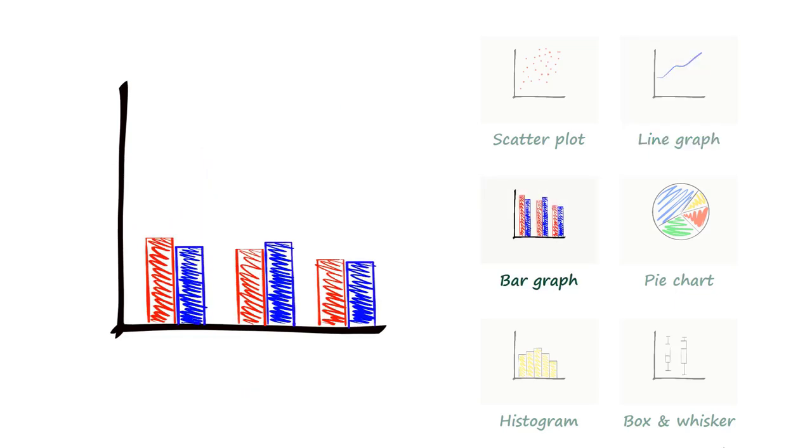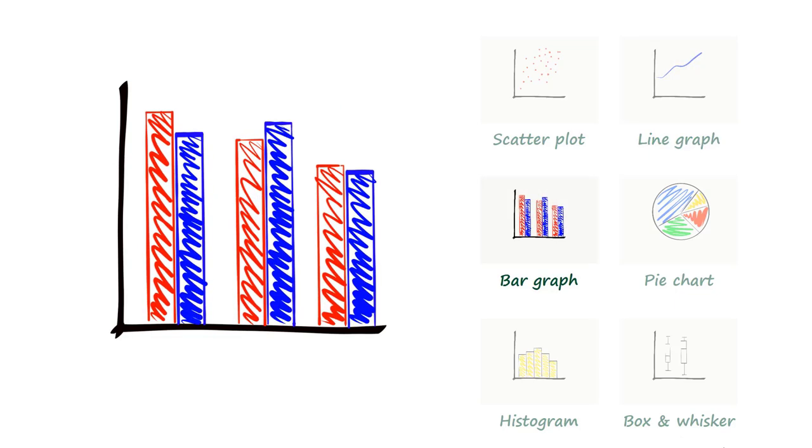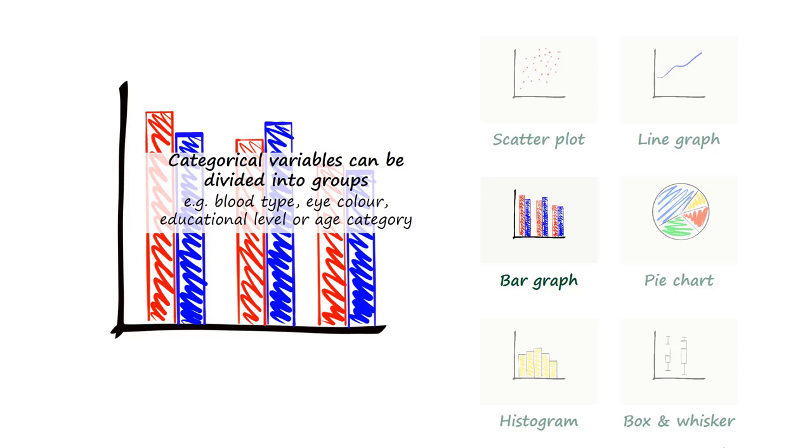Bar graphs are used to present categorical data. Categorical variables represent types of data which may be divided into groups. For example, blood type, eye colour, educational level or age category.